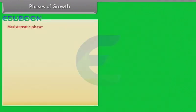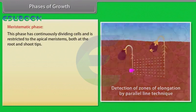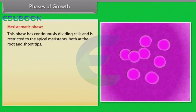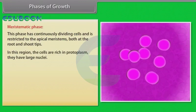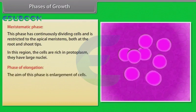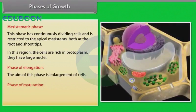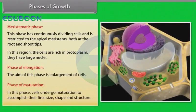Meristematic phase: This phase has continuously dividing cells and is restricted to the apical meristems, both at the root and shoot tips. In this region, the cells are rich in protoplasm and they have large nuclei. Phase of elongation: The aim of this phase is enlargement of cells. Phase of maturation: In this phase, cells undergo maturation to accomplish their final size, shape and structure.